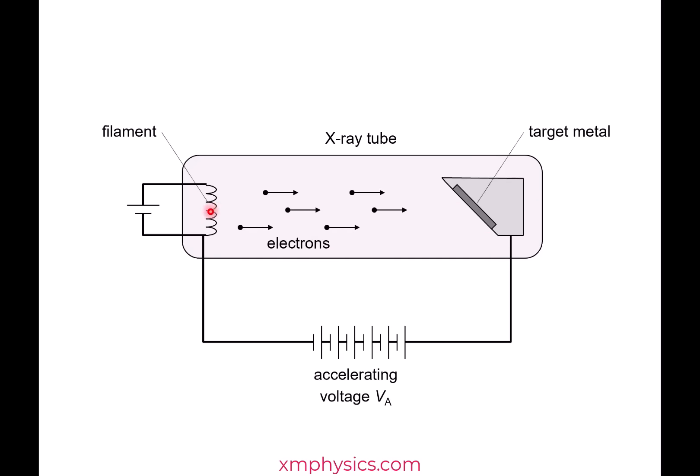That means by the time the electrons arrive at the target matter, they'll have kinetic energy of around 10 kilo electron volts. When they smash into the target matter, they smash it so hard that the matter actually emits X-rays.